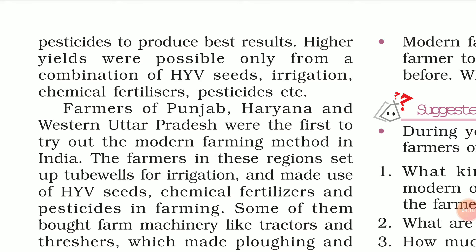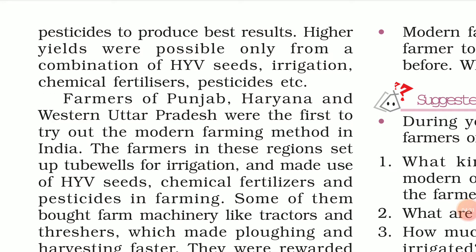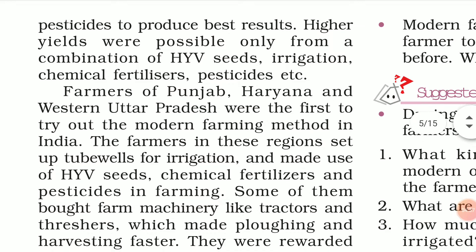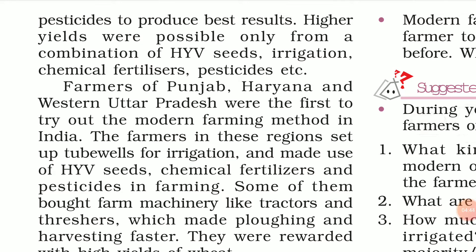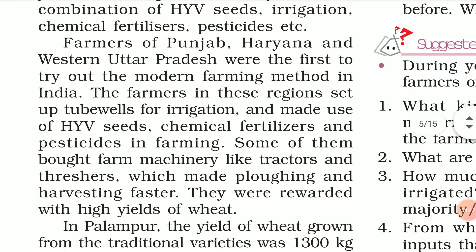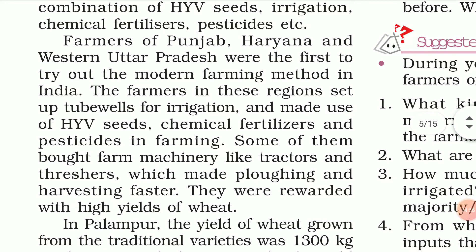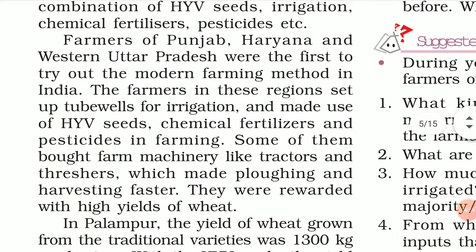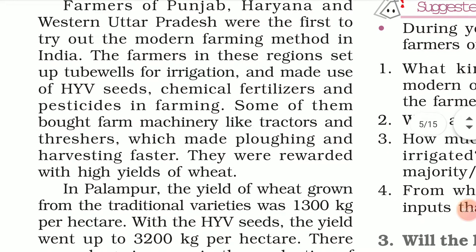HYV seeds could not be used with only natural manure available at home — there was no effect without chemical inputs. Higher yield was possible only from a combination of HYV seeds, irrigation, chemical fertilizers, and pesticides. Farmers of Punjab, Haryana, and Western Uttar Pradesh were the first to try out these modern farming methods in India, setting up tube wells for irrigation.